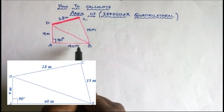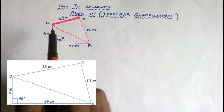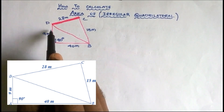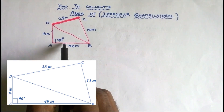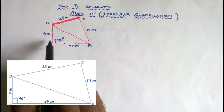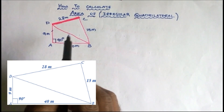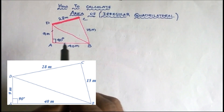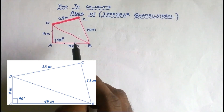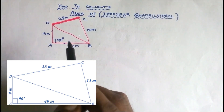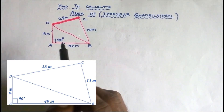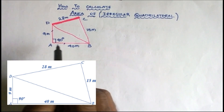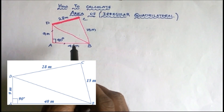We have two lines, A and D, A and B, that are at 90 degrees to each other. So if you want to land, we have a right angle. That's why we use 90 degrees.